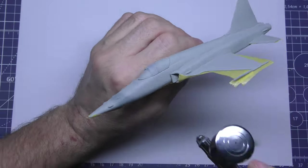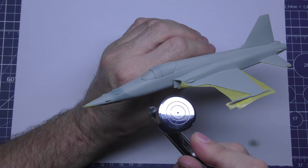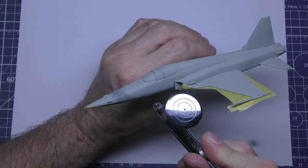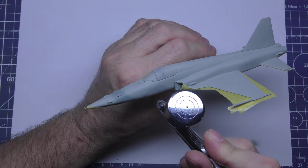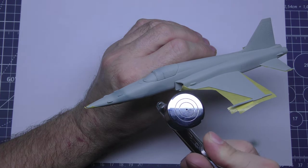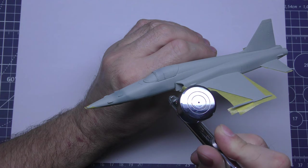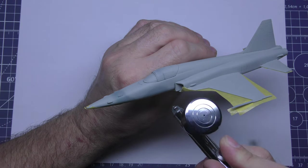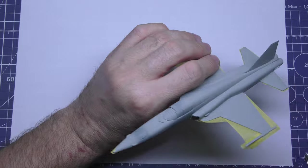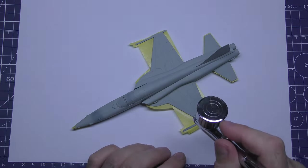This time I'm using Mr. Color again, it's 335—it's called medium sea grey. I know these are probably not the proper colors, but it's what I've got. And I'm not buying paint specifically for a kit like this. I don't think it's worthwhile.